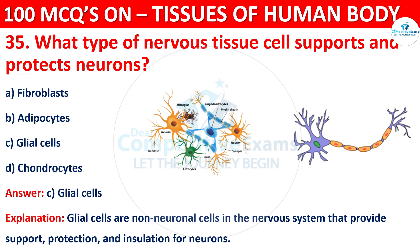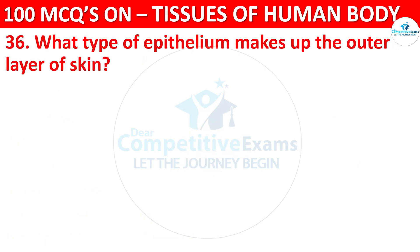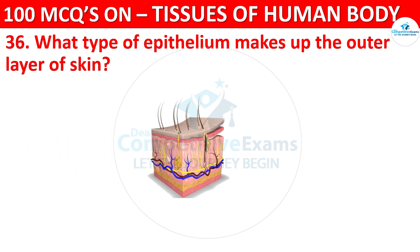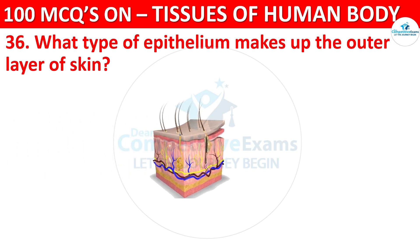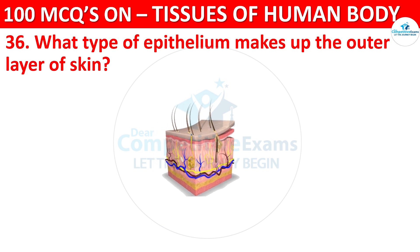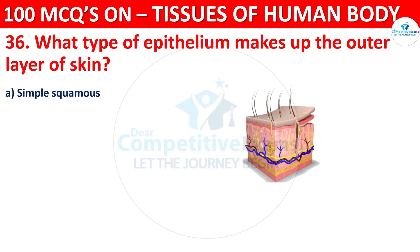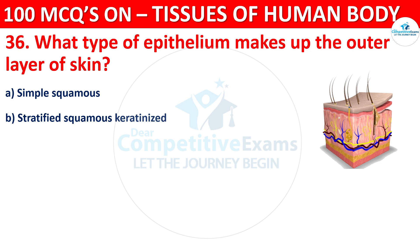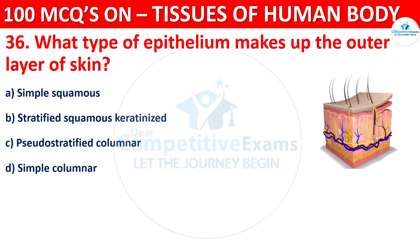Question number 36. What type of epithelium makes up the outer layer of skin? Options are Simple Squamous, Stratified Squamous Keratinized, Pseudostratified Columnar, or Simple Columnar.